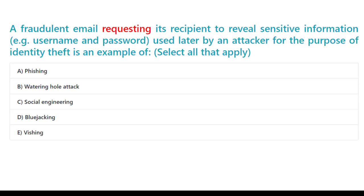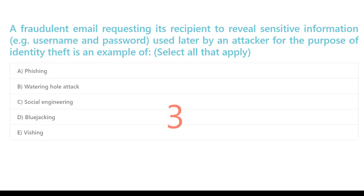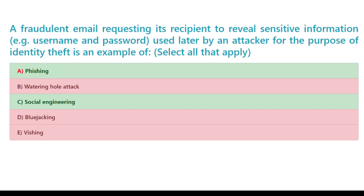A fraudulent email requesting its recipient to reveal sensitive information, e.g. username and password, used later by an attacker for the purpose of identity theft is an example of — select all that apply: A. Phishing. B. Watering hole attack. C. Social engineering. D. Bluejacking. The correct answers are A. Phishing and C. Social engineering.